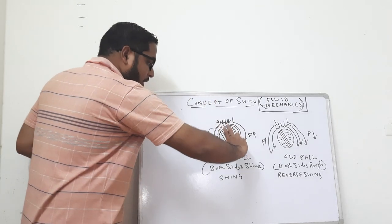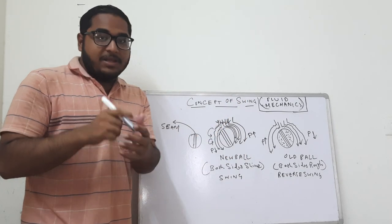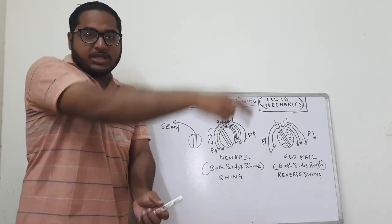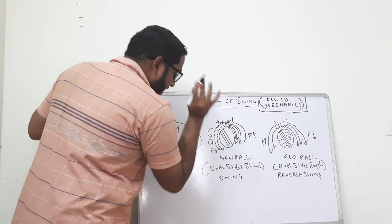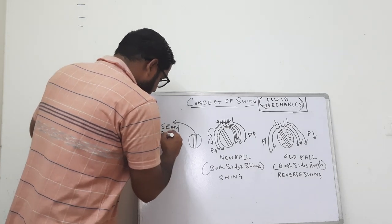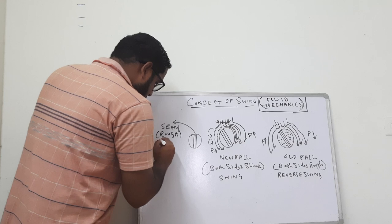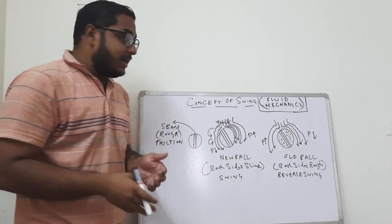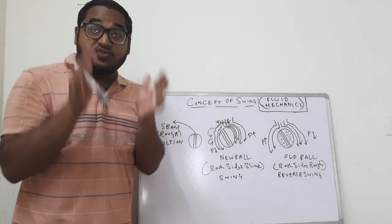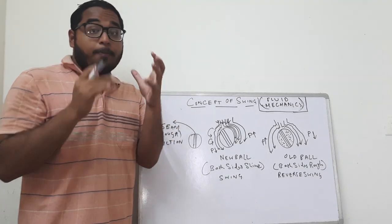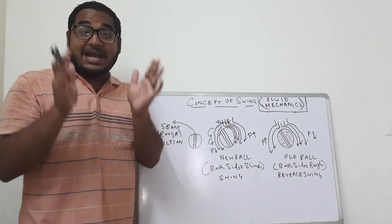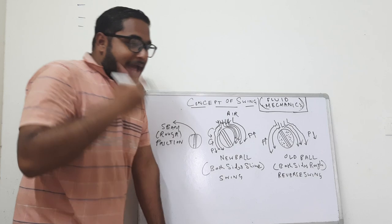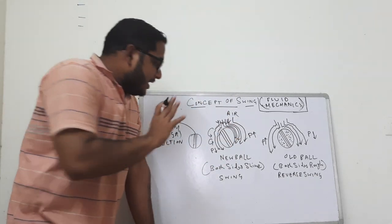Let us start with an outswing delivery. The bowler holds the ball with the seam kept away from the right-handed batsman. When the seam position is away from the right-hander, remember the seam is rough, so the seam provides friction. According to fluid mechanics, wherever there is friction or a restriction, there is wake formation, eddy formation, and a loss of pressure energy. That is what drives the concept of swing.